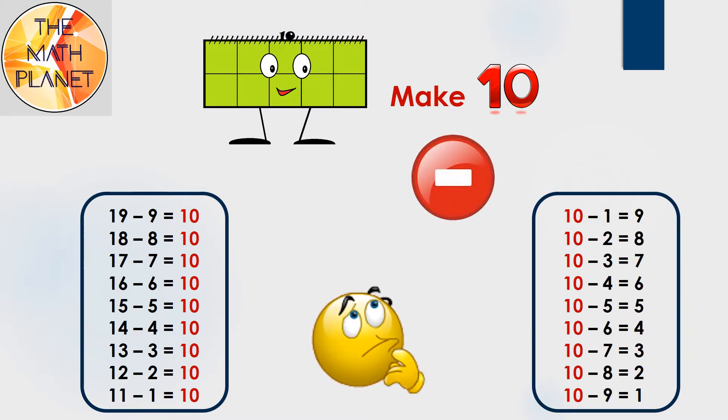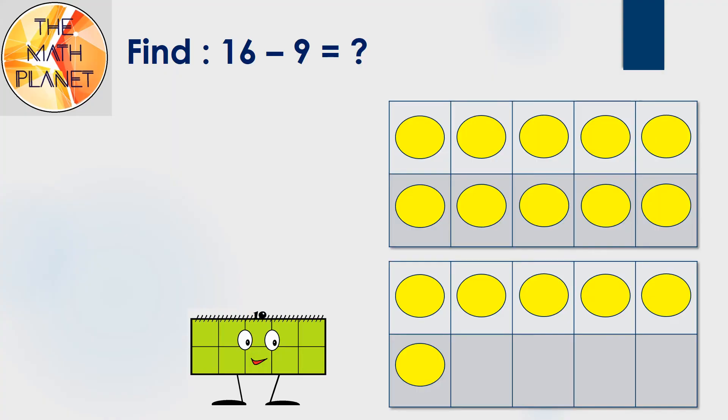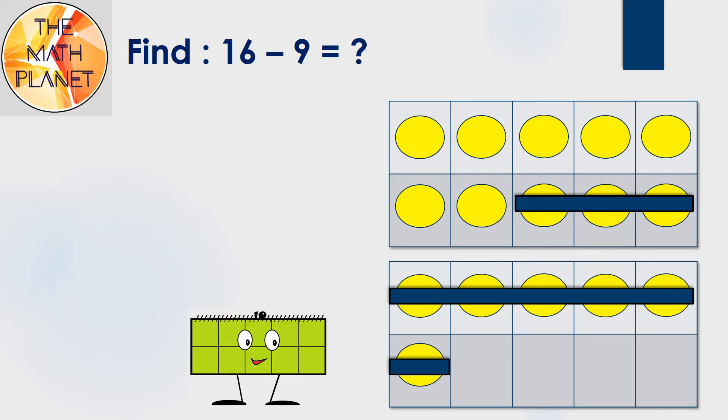Let's see an example. To find the difference between 16 and 9, first I will use 10 frames to draw 16, then I'll subtract 6 to make 10, then I'll subtract 3 more to get the difference. I split the 9 into 6 and 3.